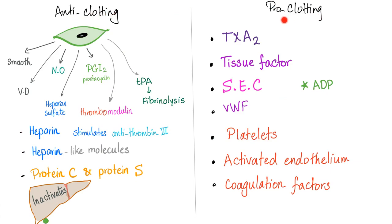Here are the anti-clotting mechanisms and the pro-clotting mechanism. Pro-clotting: thromboxane A2, tissue factor activating the extrinsic pathway, sub-endothelial collagen activating the intrinsic pathway and platelet activation, ADP from platelet granules, von Willebrand factor, platelets, activated endothelium, and coagulation factors. Anti-clotting: smooth endothelium producing nitric oxide, heparin sulfate, prostacyclin I2, thrombomodulin, TPA for fibrinolysis, heparin, protein C and S, and the liver inactivating over-activated coagulation factors.